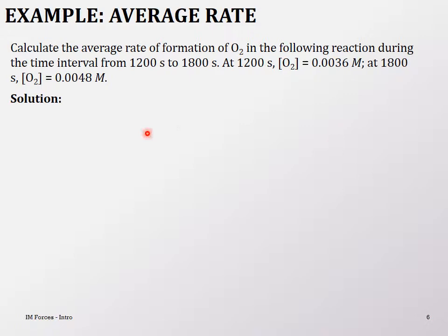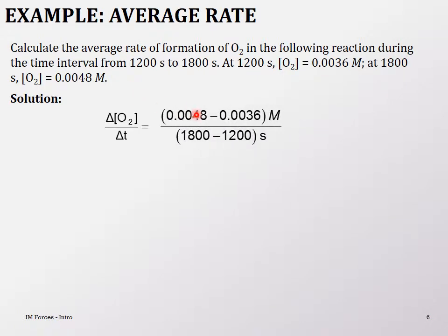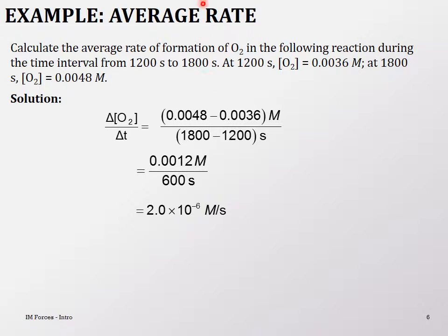Calculate the average rate of formation of oxygen in the following reaction. Here is an example of what we just talked about. The time is given from 1,200 seconds to 1,800 seconds, and the concentrations are given to us. All you have to do is subtract the two concentrations and divide by the change in time, and that gives your final answer — the average rate. Keep it simple; the concentrations and the time are both given.